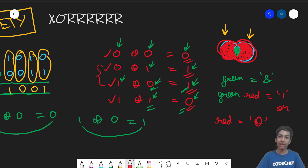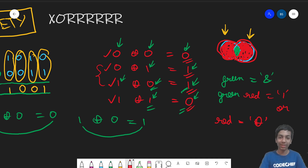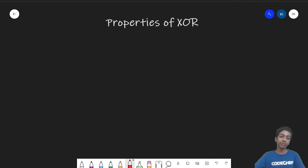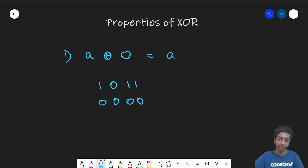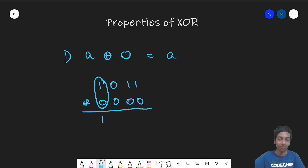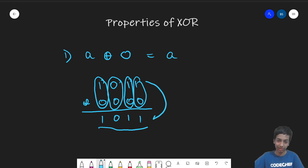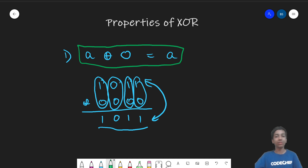Now let's discuss a few properties. We have already discussed two important ones: 0 XOR any bit is the same, and 1 XOR any bit toggles it. The first formal property is A XOR 0 = A. Because when you XOR any number with 0, each bit is unchanged — 1 XOR 0 is still 1, 0 XOR 0 is still 0. So any number XOR'd with 0 is the number itself.